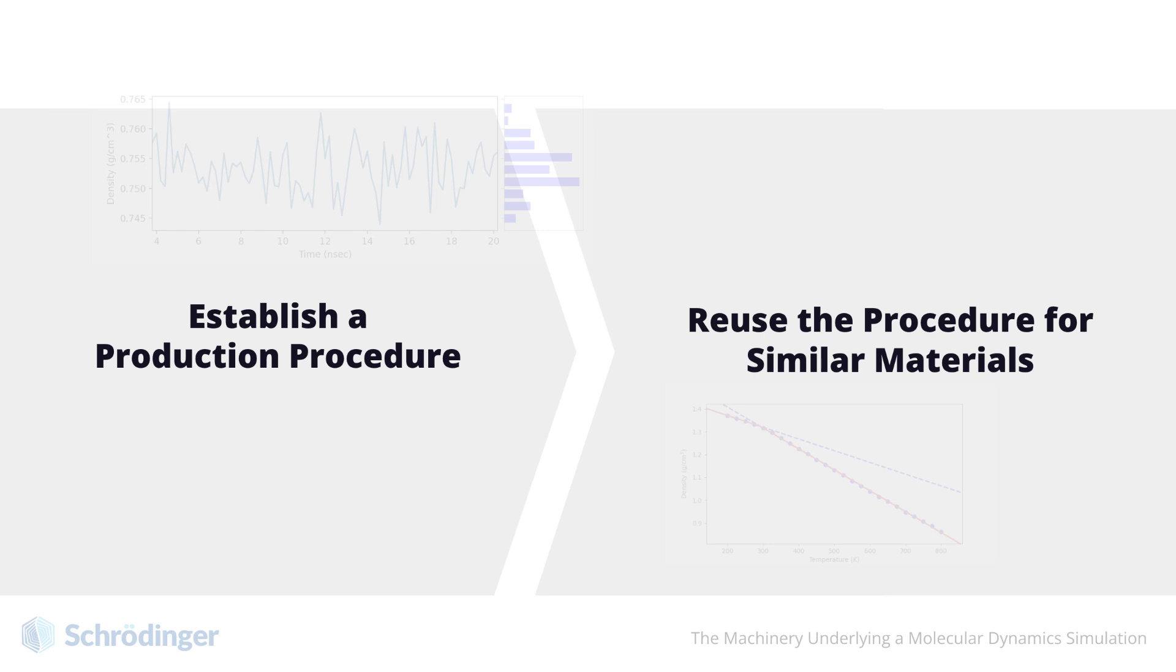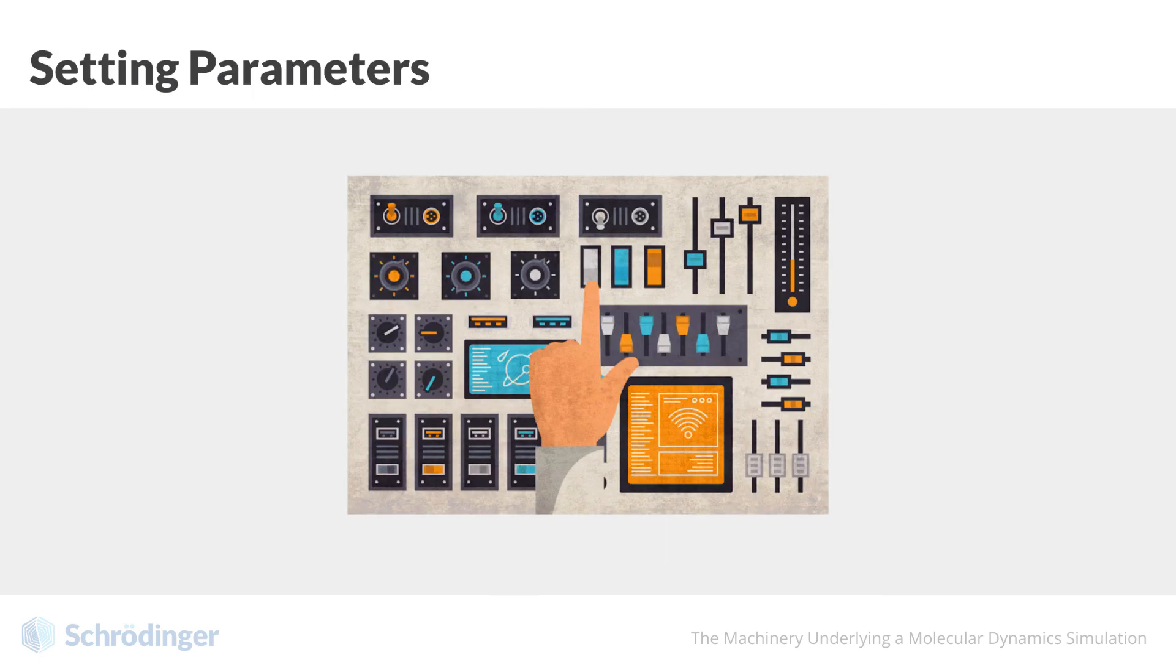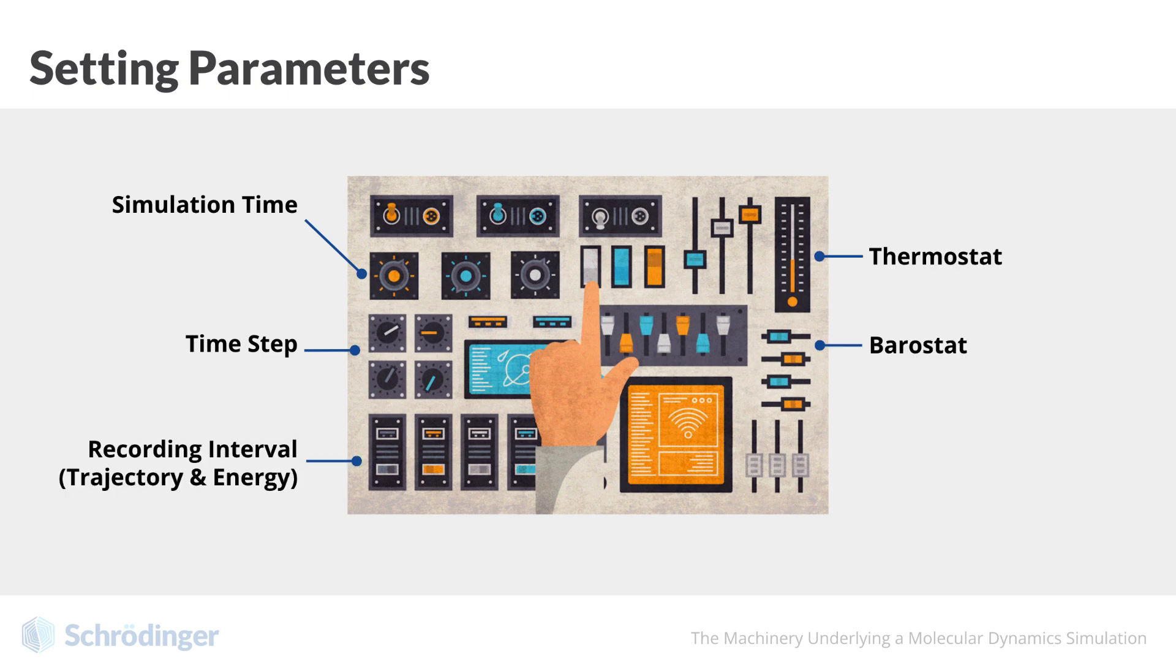In both the equilibration and production stages, we will need to define various parameters for our simulation. For example, the simulation time, the time step, recording intervals, thermostats or barostats if needed, and thermodynamic ensembles.